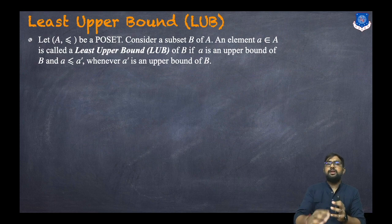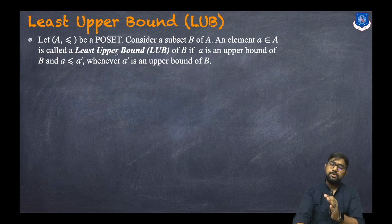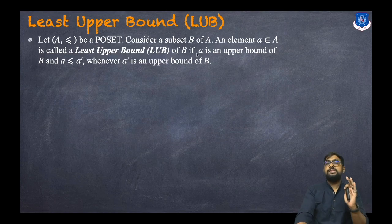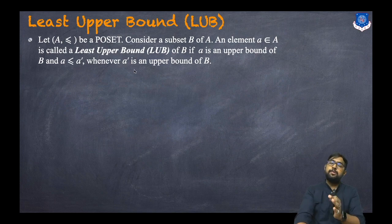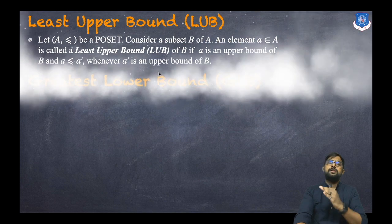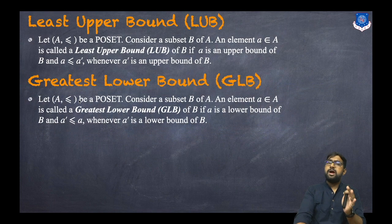Let us understand what is the Least Upper Bound. We all know what an upper bound is. So let a ≤ b. Consider a subset B of the given set A. An element a belonging to A is called a Least Upper Bound, or LUB, of B if: first, a is an upper bound of B, and second, a ≤ a' whenever a' is an upper bound of B.